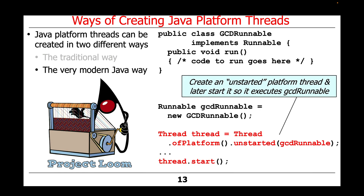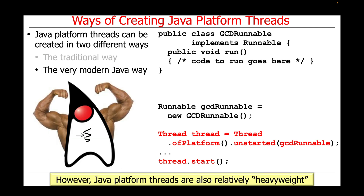A more flexible way to create and start a platform thread to execute GCD runnable is to use the ofPlatform factory method and then call the start method on the platform thread created by ofPlatform. This modern Java way is more flexible than the traditional way because you can create an unstarted platform thread and then later start it. However, Java platform threads are relatively heavyweight, so we'd prefer an alternative approach if possible.